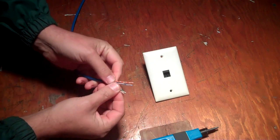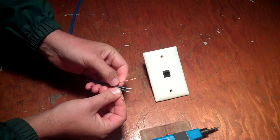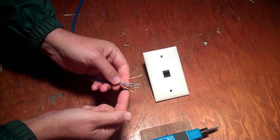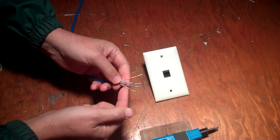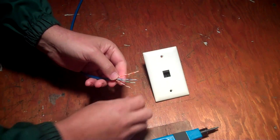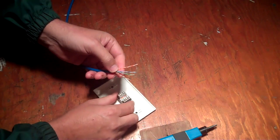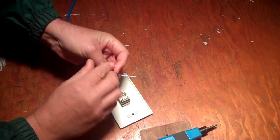Now inside the Cat5 are four pairs, and each one is twisted. I want to make sure I try to keep as many twists in the wire while I'm doing this. So I'm going to flip my plate over and I'm going to match the color codes.